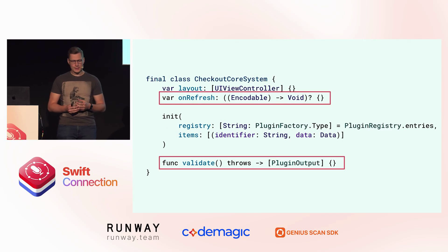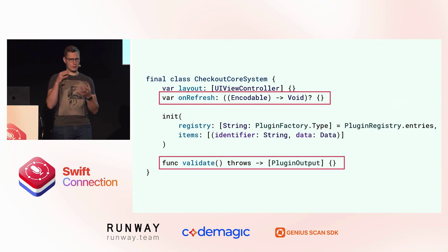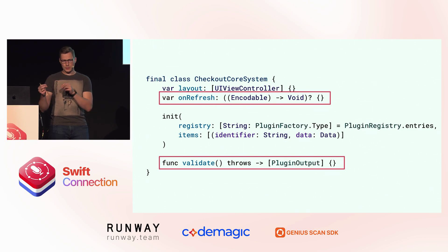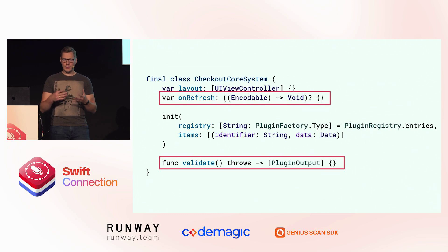The problem arises when you need communication between those different elements, like in the checkout example — either the core system needs to get something out, like validation, or elements need to communicate between each other. Here's a code snippet of that core system for checkout: you have layout, which returns the view controllers embedded in individual plugins, and two things needing communication: refresh (the coupon code plugin needs to recalculate pricing on the backend) and validation when you click pay.